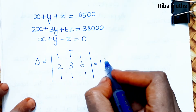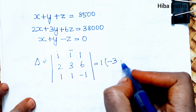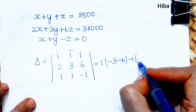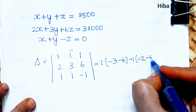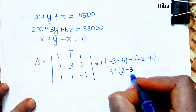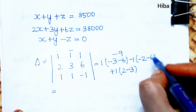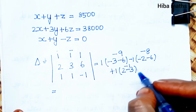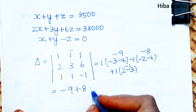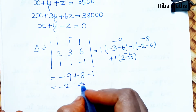Expanding along the first row with signs plus, minus, plus: first element gives 1 times (3×(−1) − 6×1) = −9; second element gives minus 1 times (2×(−1) − 6×1) = minus(−8) = +8; third element gives 1 times (2×1 − 3×1) = −1.